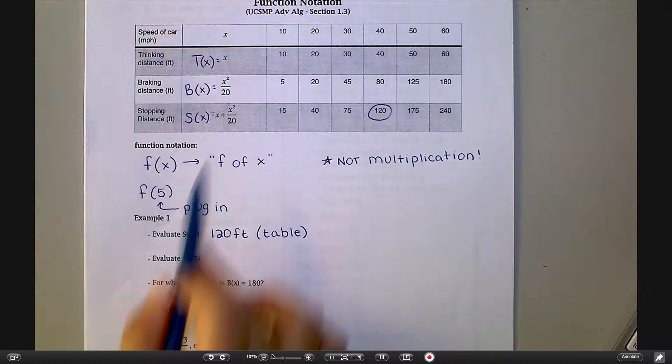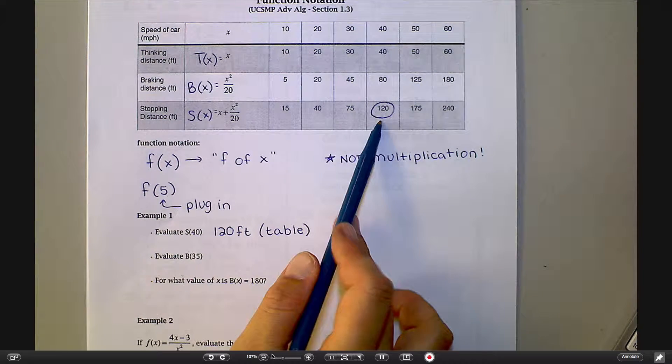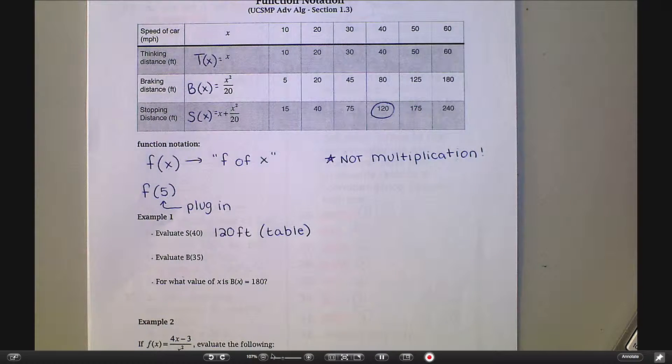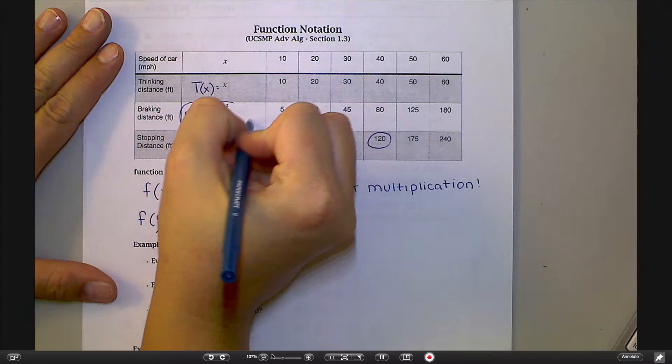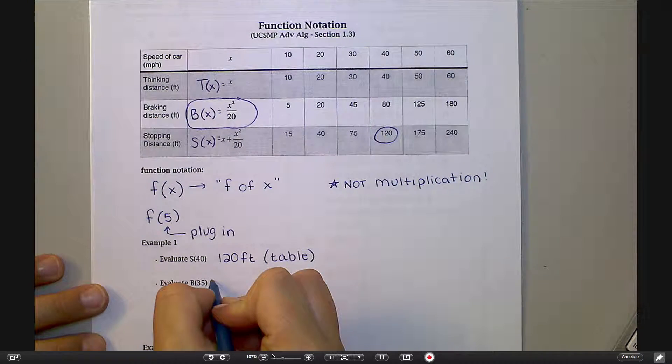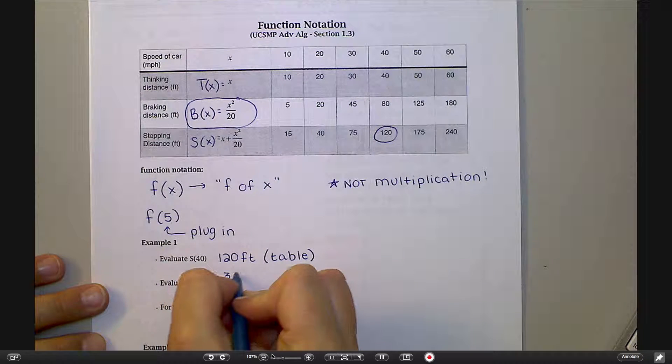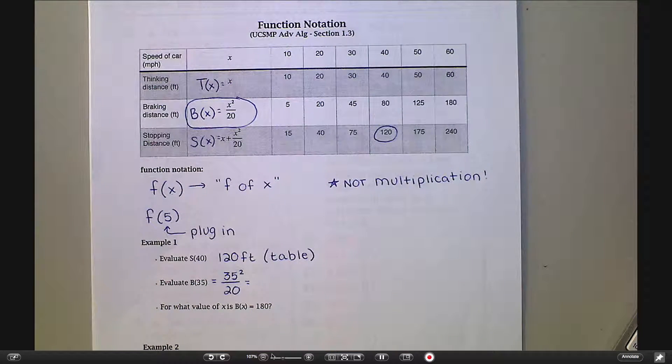I could have looked at this s of x equation and plugged in 40. If I had done that, this is the answer I would have gotten. Let's look at b of 35. What's that asking you for? Braking distance when you're going 35 miles per hour. Now what's the problem with that? Not in the table. But it's okay because I know what b of x is equal to. I know where these numbers are coming from. All I have to do is plug that 35 into that formula. So I'm going to say it would be 35 squared over 20, and I'm going to need calculator help here.